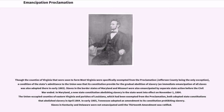Slaves in the border states of Maryland and Missouri were also emancipated by separate state action before the Civil War ended. In Maryland, a new state constitution abolishing slavery went into effect on November 1, 1864. The Union-occupied counties of eastern Virginia and parishes of Louisiana, which had been exempted from the proclamation, both adopted state constitutions abolishing slavery in April 1864. In early 1865, Tennessee adopted an amendment to its constitution prohibiting slavery. Slaves in Kentucky and Delaware were not emancipated until the 13th Amendment was ratified.